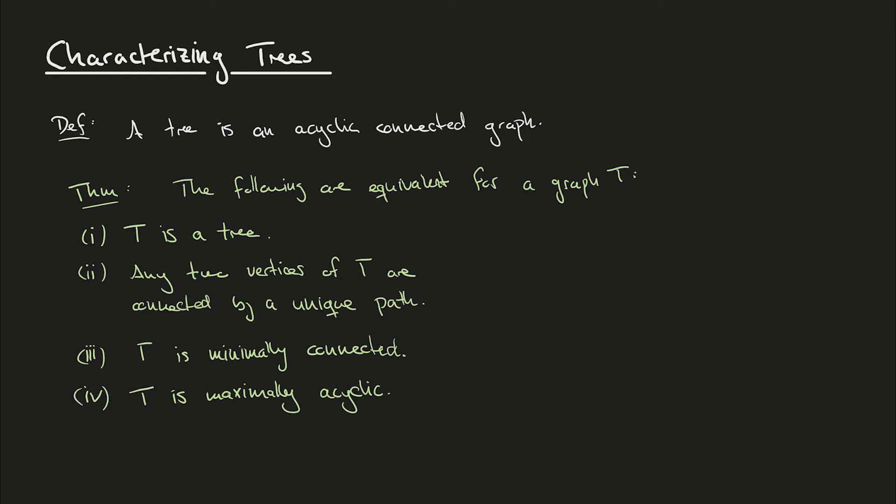So these four ways of looking at a tree give different perspectives. The first one uses two properties: T is acyclic and connected. The second point doesn't talk about the graph being acyclic or connected — instead it talks about paths in the graph, saying any two vertices of T are connected by a unique path. The existence of a path corresponds to connectivity, and the uniqueness corresponds to the acyclicity aspect.